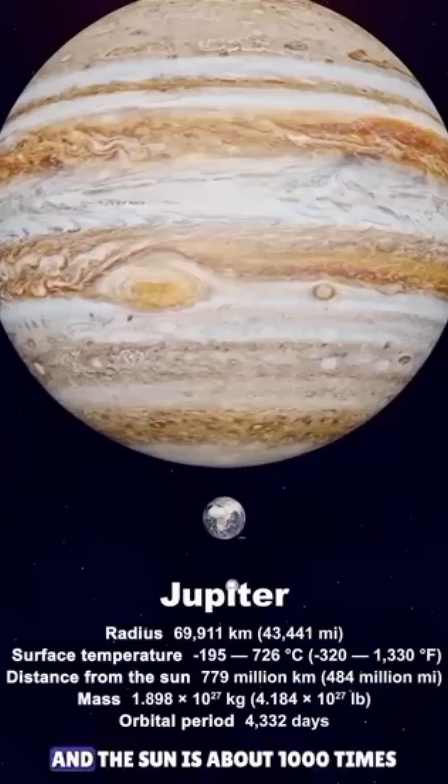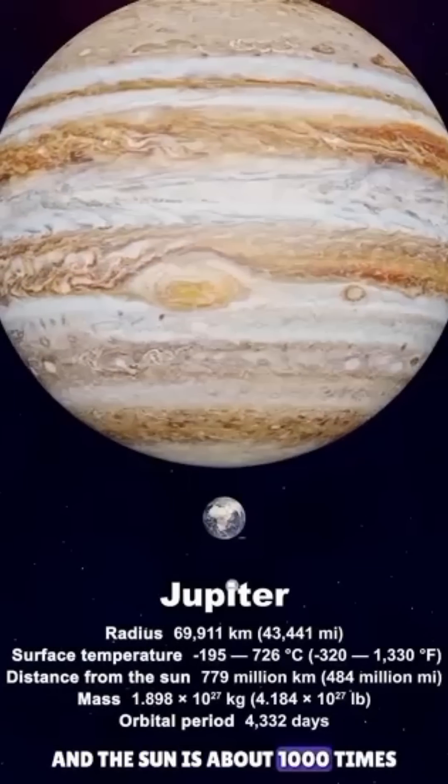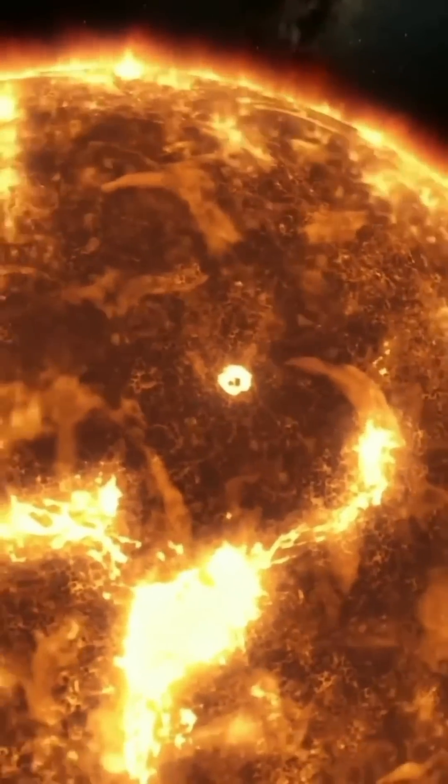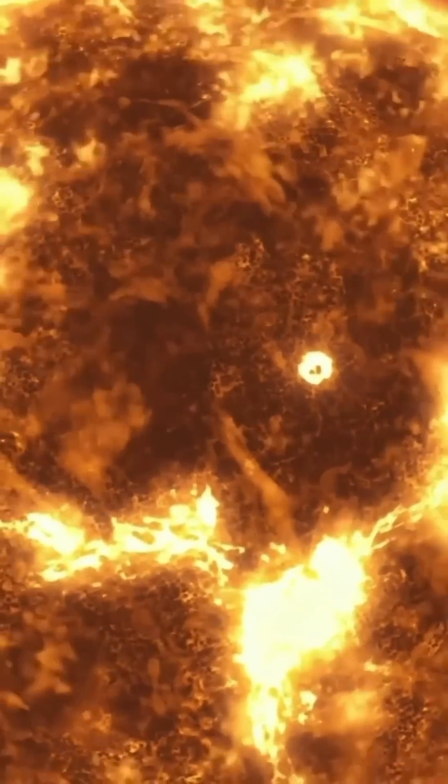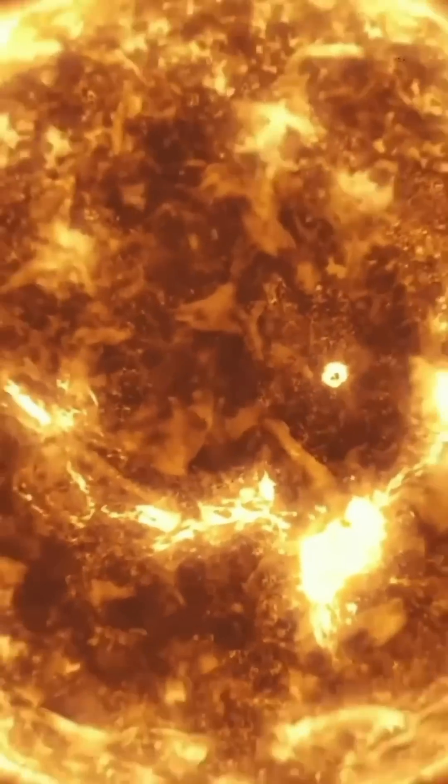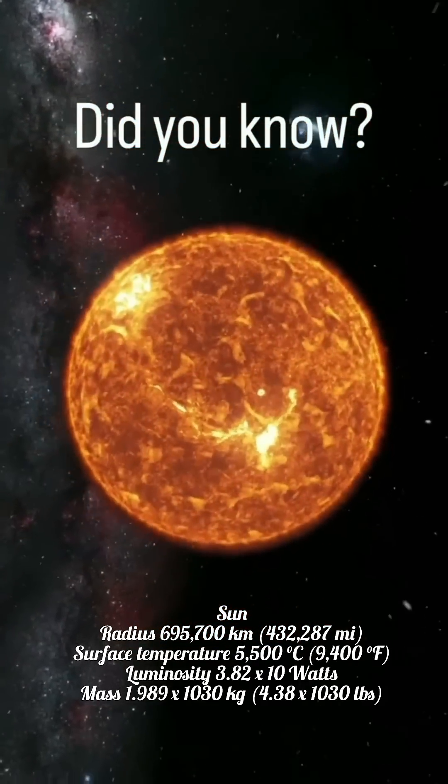For instance, Jupiter is 318 times larger than Earth, and the Sun is nearly 1,000 times larger than Jupiter, making Earth seem very small in comparison.